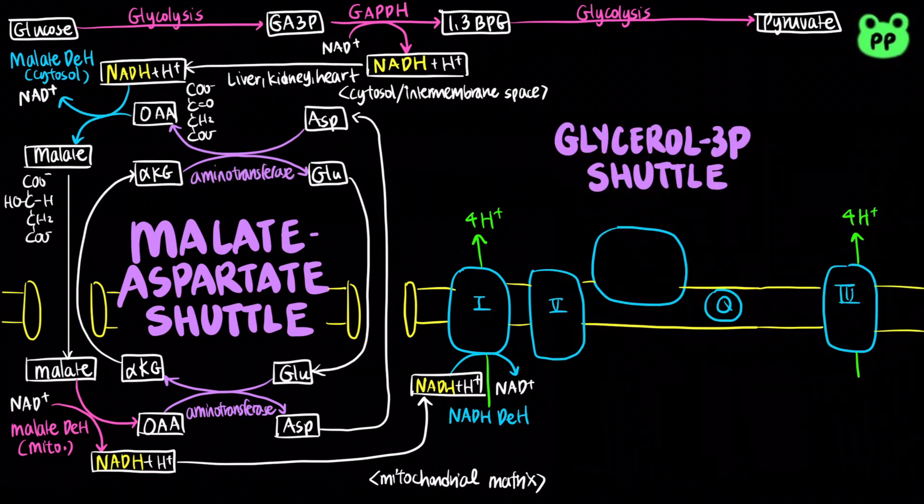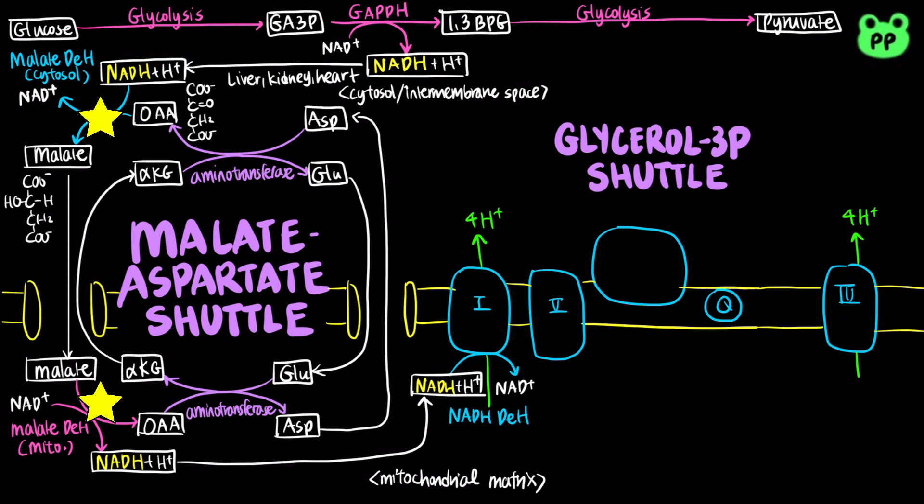Notice that the malate-aspartate shuttle essentially involves two reversible reactions that take place on either side of the inner mitochondrial membrane: malate dehydrogenase and aminotransferase.